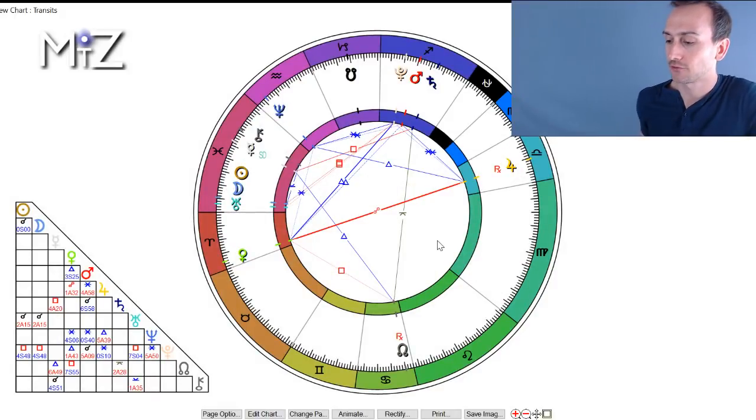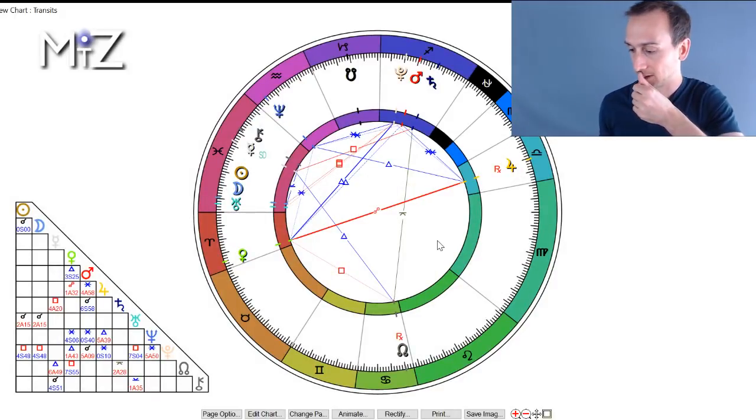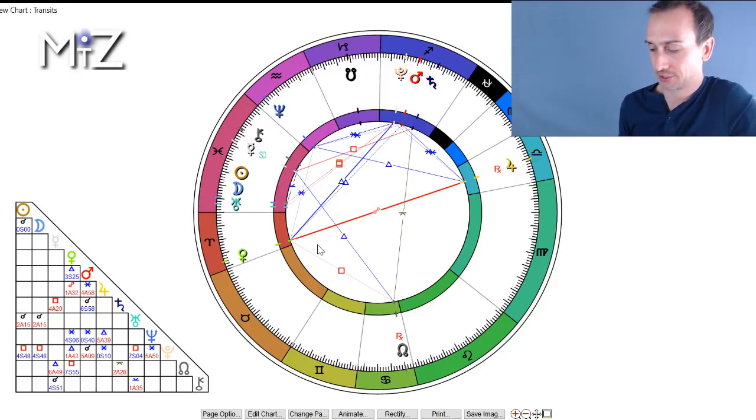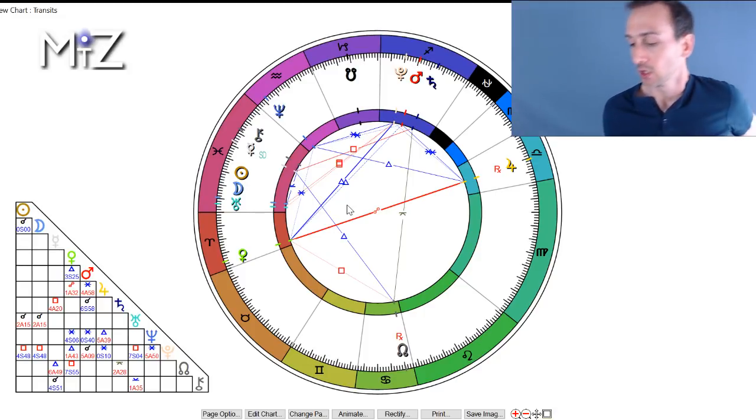All right. So here is the chart for the new moon, which will be at 23:03 Eastern time. So for those of us in the Americas, it'll be late Sunday. If you're in Europe or the East, you will find that it will be early Monday for you.